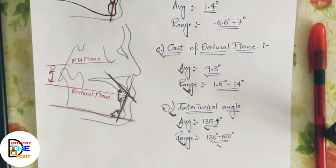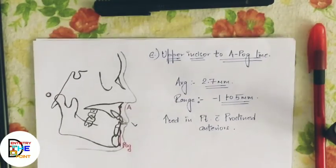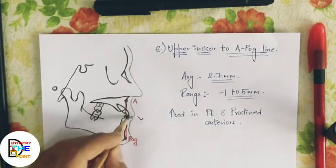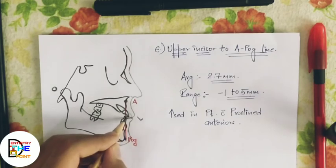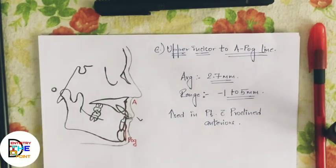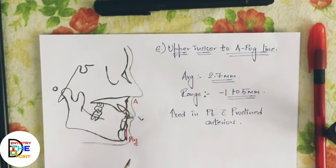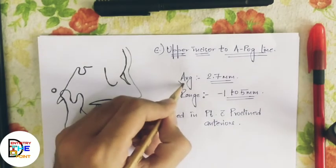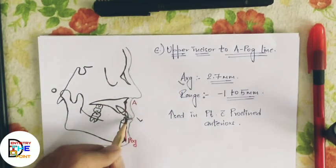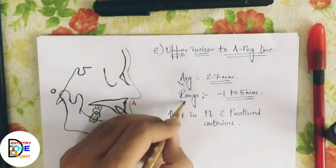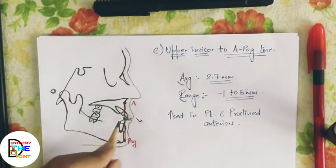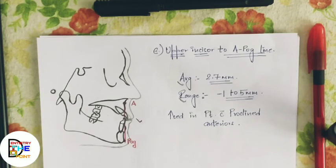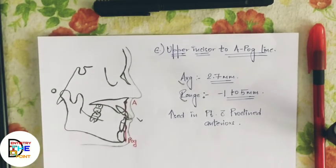The fifth dental parameter is the upper incisor to A-Pog line. First, draw the A-Pog line from Point A to pogonion; then mark a point on the incisal edge of the upper incisor. The linear distance between the A-Pog line and the incisal edge measures the degree of proclination of the upper incisors. The average is 2.7 mm, ranging from minus 1 to 5 mm. If the incisors are proclined, this distance increases.